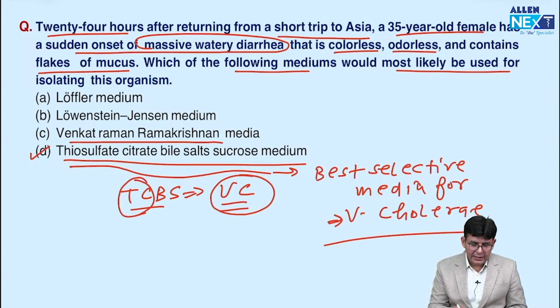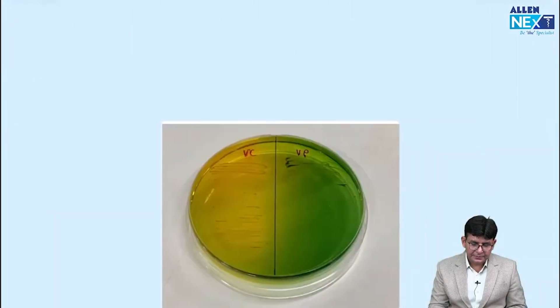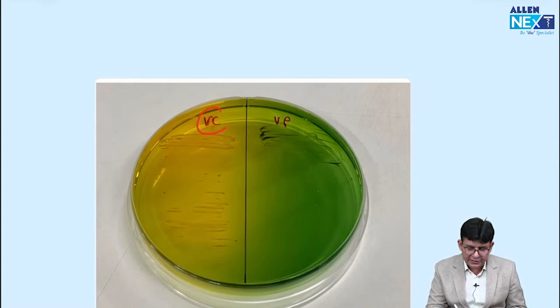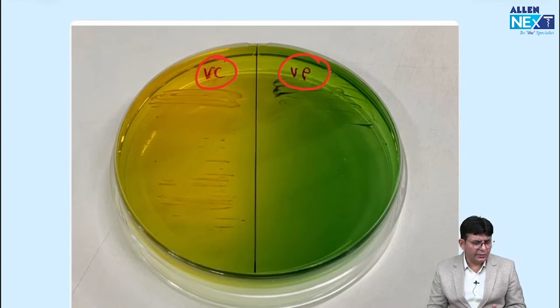Let's see this. This is TCBS. This particular one is TCBS and as you can see that one side it is written VC and one side it is written VP. What is the meaning of this? Treatment is like you can use drugs are basically not of much value here. But you can use doxy and all along with the IV fluids that is the mainstay of treatment because dehydration happens massive in this.